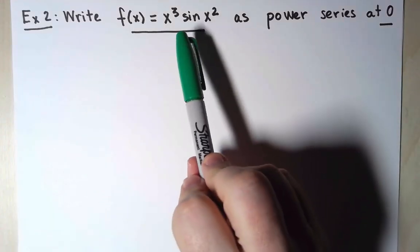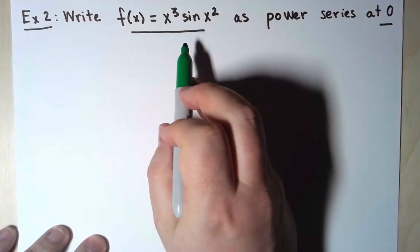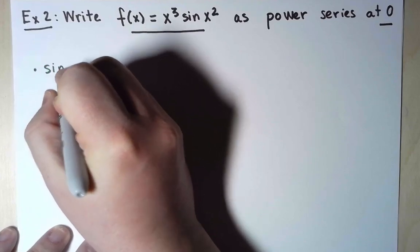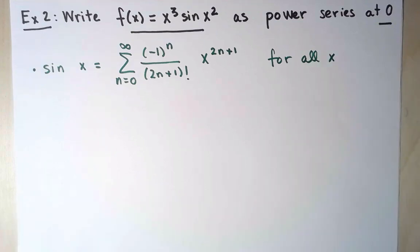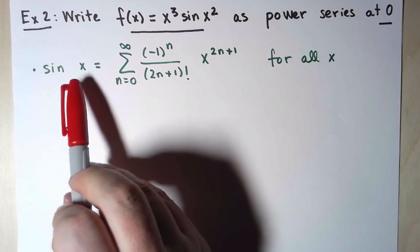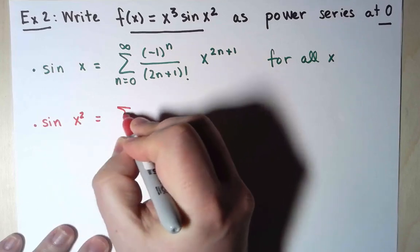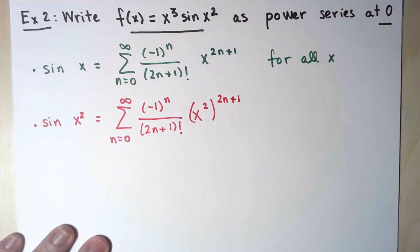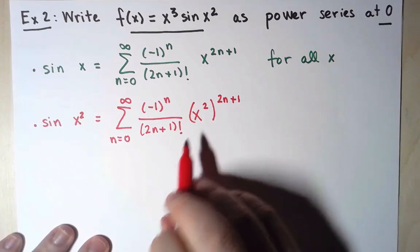For the second example, I want to write this function, x cubed sin x squared, as a power series centered at zero. Like before, I'm going to start with a function whose power series I already know, and in this case that would be sin x. And we know that this expansion for sin x is true for any real number x. Now, instead of sin x, I want to have sin x squared. Since this was true for all x, it will also be true when, instead of x, I write x squared everywhere.